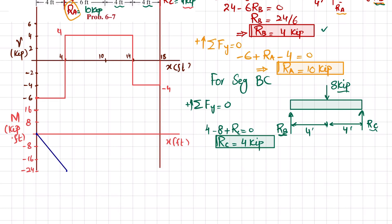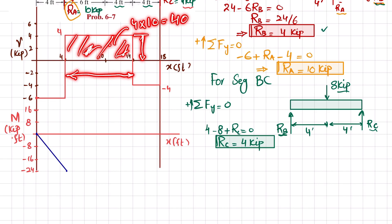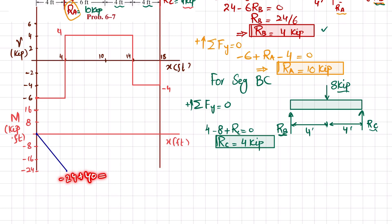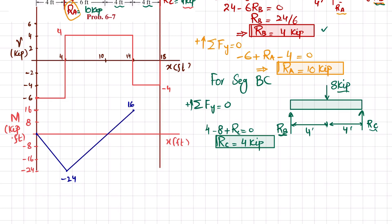The second area under the shear force diagram has height 4 and width 10, giving +4 × 10 = +40. So −24 + 40 = +16 kip·ft at that point. Since shear is horizontal with positive slope, bending moment is one degree higher with increasing slope. The third area is −4 × 4 = −16, so +16 − 16 = 0 at the right end.